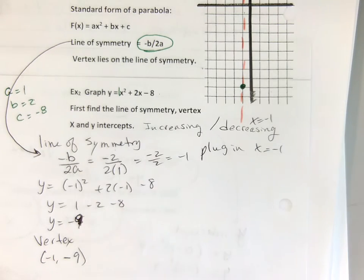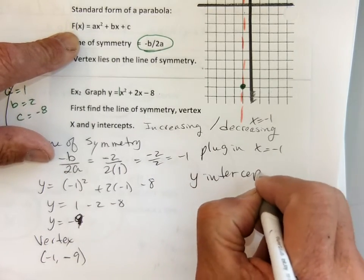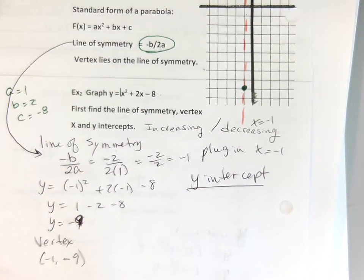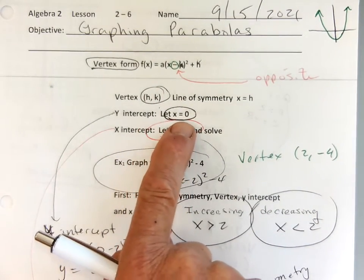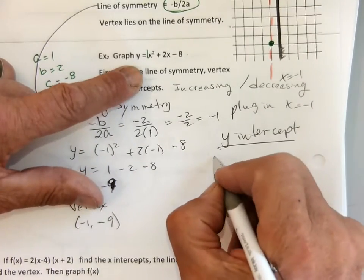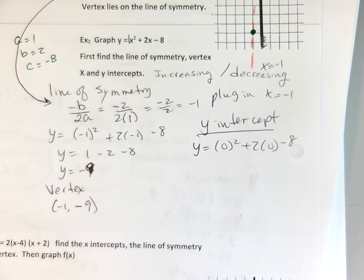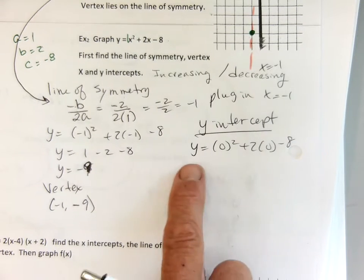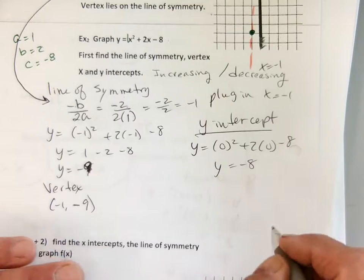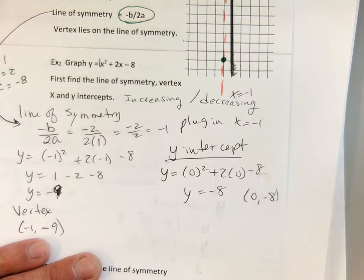Now it gets easier. My y-intercept — to find a y-intercept we just let x equal 0. So if x is 0, I have y equals 0 squared plus 2 times 0 minus 8. That gives me y equals negative 8. So my y-intercept is at 0, negative 8. And I can graph that.